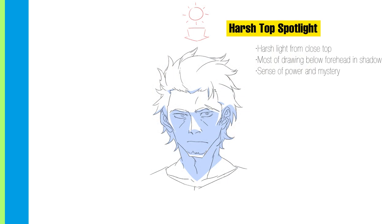So you see this sometimes — the top light. Unlike the overhead light, this one has the light source really close to the character and really intense. The top of the forehead is lit while most of the face under the ridge of the brow is in shadow.